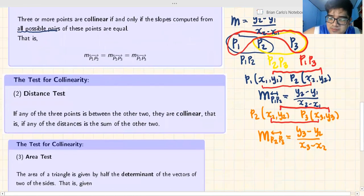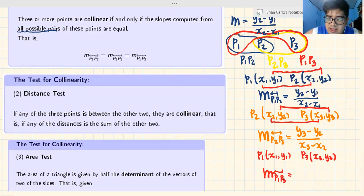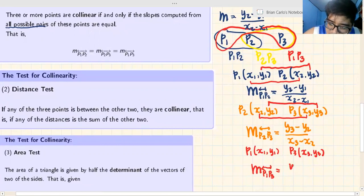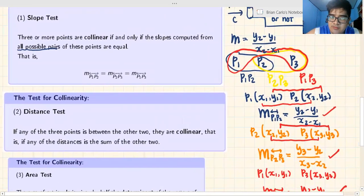Next, for P1 at x1,y1 and P3 at x3,y3, you guessed it - the slope M(P1,P3) is y3 minus y1 over x3 minus x1. When you prove these three slopes are equal, it means the three points are collinear. That's what the slope test says.